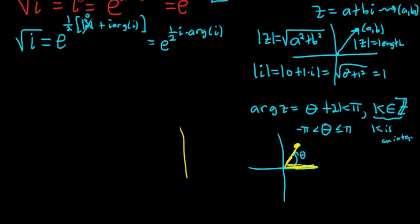In this case, our complex number is i. So i is right here in the complex plane. You can think of i as the point 0, 1. So this is our theta, so we all know that that would be pi over 2.